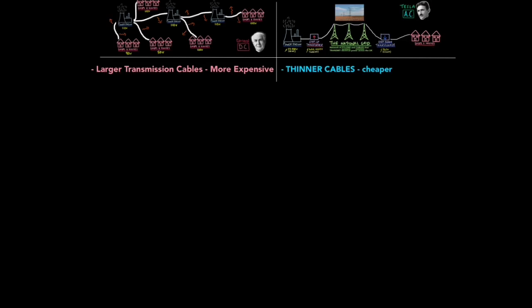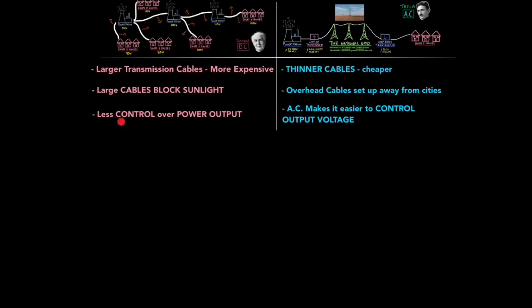Larger cables above our head block sunlight, but overhead cables are set up away from cities with AC in the countryside where it's not an issue. DC also offers less control over power output, whereas AC makes it easier to control output voltage due to transformers. But also, if you think about how alternating current is generated, you can spin that magnet faster, have more turns in your coil, and so on. If you've forgotten that, look at the tutorial on generating electricity.